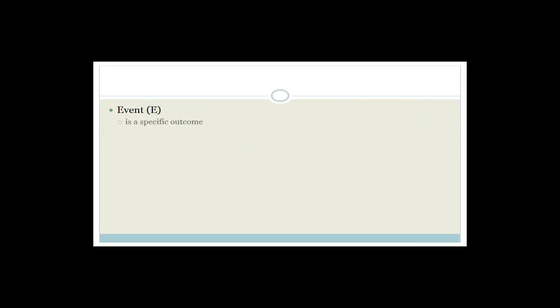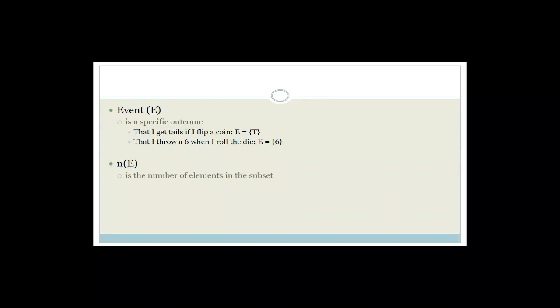An event is a specific outcome. For example, when you throw the die, you want a six to come up — that is a specific event. If I get tails when I flip a coin, that is the event. If I throw a six when I roll the die, that is the event. An event is a specific outcome that we're hoping for, and we usually talk about events as in: what is the probability of that event happening? The number of events is the number of elements in the subset. For both of these examples, the number of elements in the subset is one.